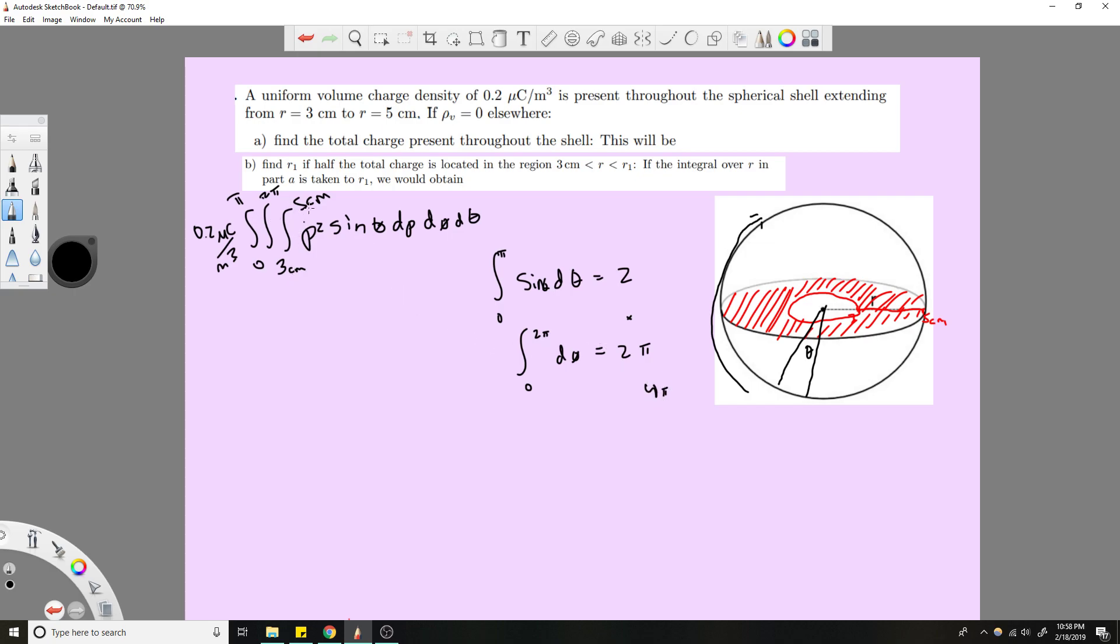The only integral left is this first one here. Like I said, it's kind of dumb to do it like this, but whenever you see this situation a lot where you have 0 to π and 0 to 2π, I just know that's going to turn into 4π. So now you have 4π and 0.2 microcoulombs per meter cubed, and you still have this integral to deal with. Three centimeters to five centimeters, rho squared d rho.